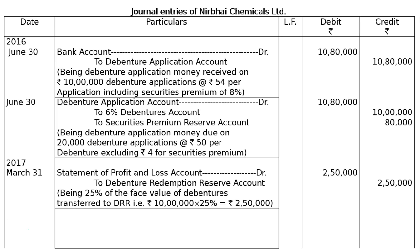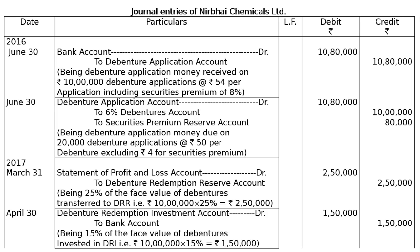Next is the investment entry — that is DRI to Bank. On March 31st: Debenture Redemption Investment Account debited to Bank Account. Being 15% of the face value of debentures invested in Debenture Redemption Investment (DRI). That is Rs. 10,00,000 into 15% = Rs. 1,50,000, shown in the debit and credit columns.